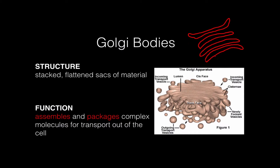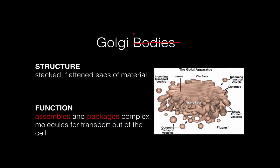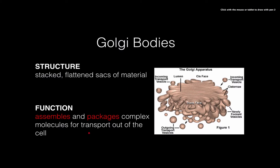Material is going to be passing through these sacks. The function of the Golgi bodies, or the Golgi apparatus — some books and teachers call them a Golgi apparatus, same idea, just slightly different words — is to assemble and package complex molecules for transport out of the cell. Things moving through the Golgi apparatus are probably going to end up leaving the cytoplasm and going out into the environment through the cell membrane.